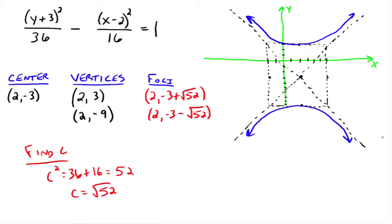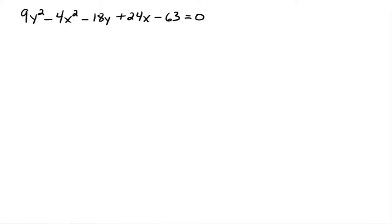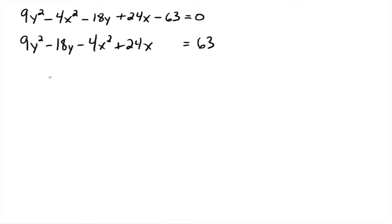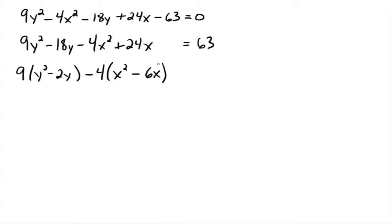Let's try one where it's not already written in standard form. We'd like to write it in standard form, so just like we did with the ellipse, we're going to complete the square on the y's and on the x's. Getting the y's together first: 9y² - 18y - 4x² + 24x, moving the constant to the other side. We need the coefficient of the squared term to be 1, so factor out 9, giving (y² - 2y). Then factor out negative 4 from the x terms, giving (x² - 6x). Be careful of the sign — a common error is made there.